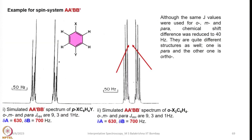Now let us look into a typical AA'BB' spin system. We give the terms AA'BB' when A and A' are magnetically non-equivalent but are chemically equivalent; similarly, BB' are chemically equivalent but not magnetically equivalent. Although the same J values were used while simulating for ortho, meta, and para positions, the chemical shift difference was reduced to 40 Hz. They are quite different structures — one is para and the other is ortho.